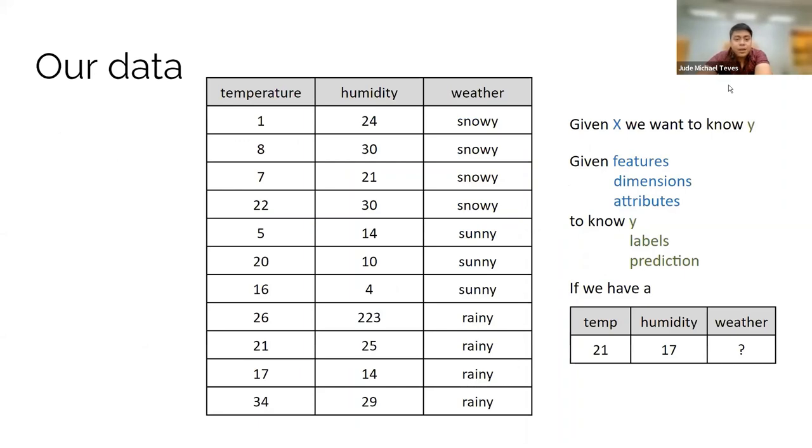So we start with our data. You have temperature, humidity, and the weather. Those are your three features, or sorry, we're trying to predict the weather class here. So we have two features, two inputs: temperature, humidity, and then we're trying to predict the weather. We have snowy, sunny, and rainy. So given X, we want to know Y. X is the temperature and humidity, your two features, and then Y is the weather.